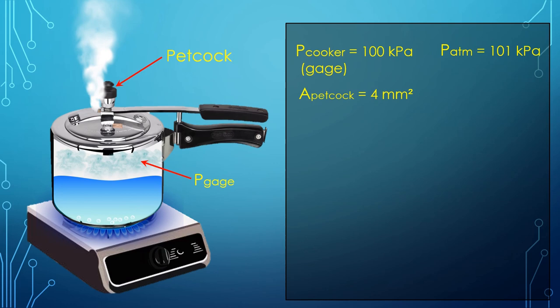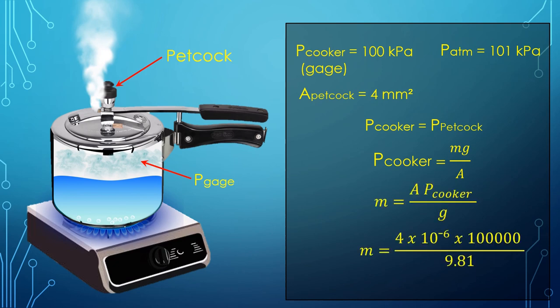The petcock should move upwards only when the pressure inside the cooker is greater than the pressure applied by the petcock. So we can say up to pressure inside cooker equal to the pressure due to petcock weight, the petcock will remain closed. Further we can write pressure due to the petcock weight as mg by a. On rearranging and putting the values, we get the petcock weight equal to 40.77 grams.